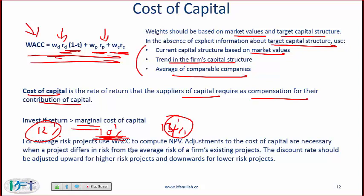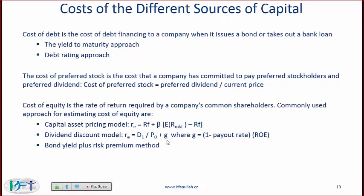For average risk projects, use WACC to compute NPV. Adjustments to the cost of capital are necessary when a project differs in risk from the average risk of a firm's existing projects. The discount rate should be adjusted upward for higher risk projects and downward for lower risk projects. Now let's summarize how to calculate the cost of capital for different sources of capital.